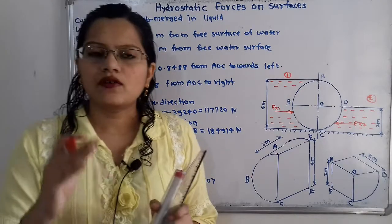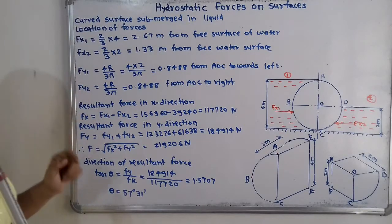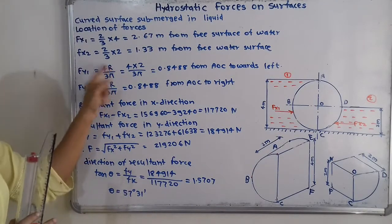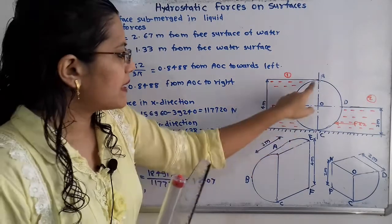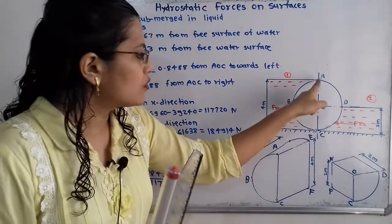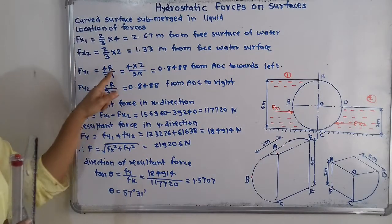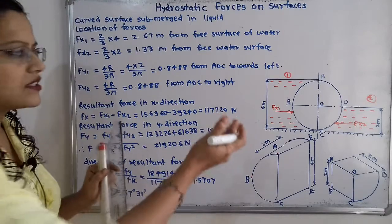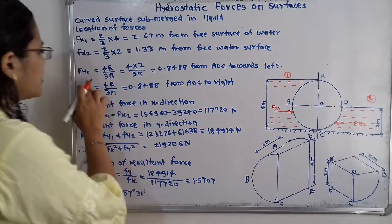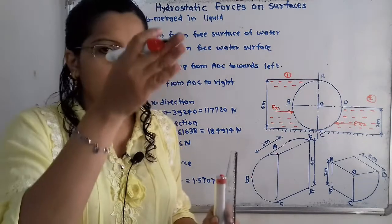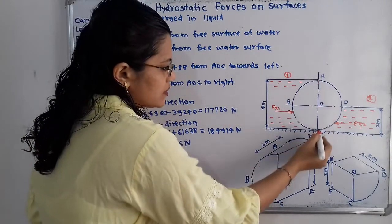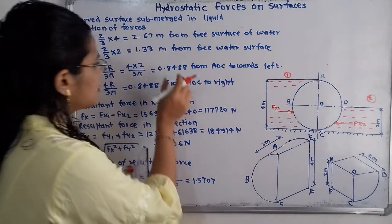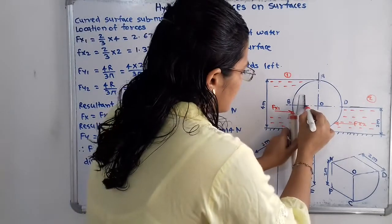For the location of FY1, the vertical force component, the formula is 4R / (3π). The radius for the left hand side is R = 4/2 = 2 meters. So the location is 4 × 2 / (3π) = 0.8488 meters from the AOC line towards the left. FY1 acts in the upward direction at 0.8488 meters from point O.